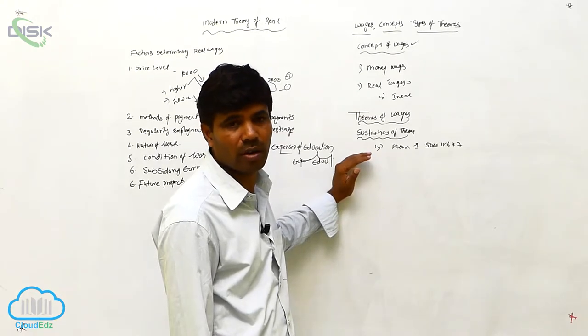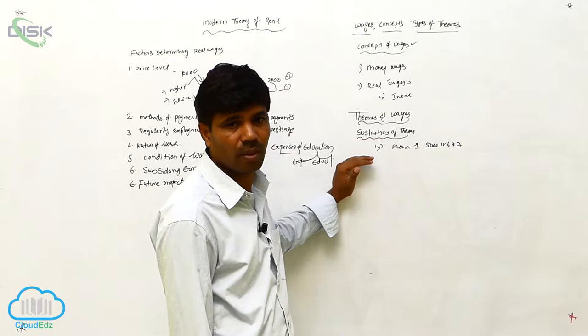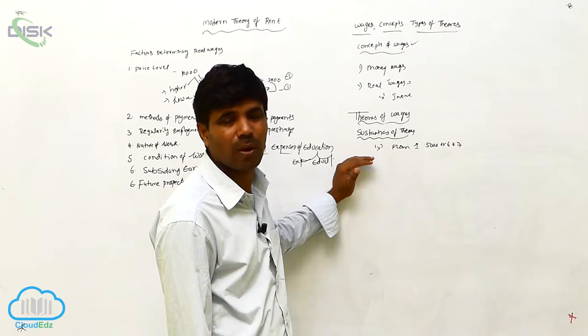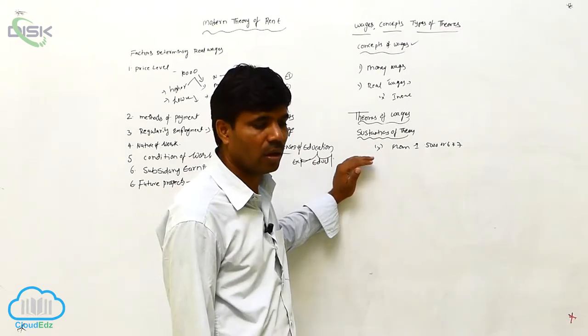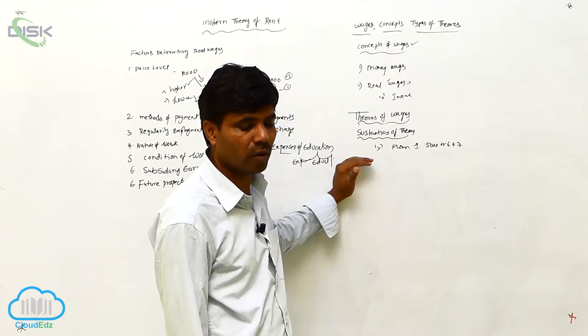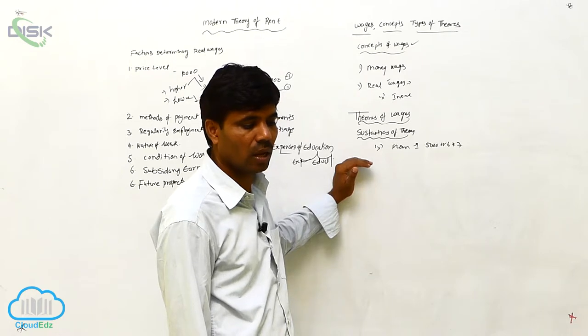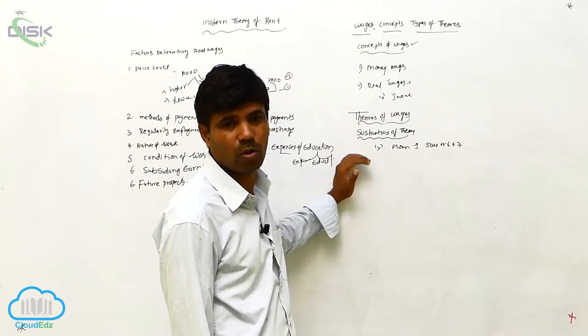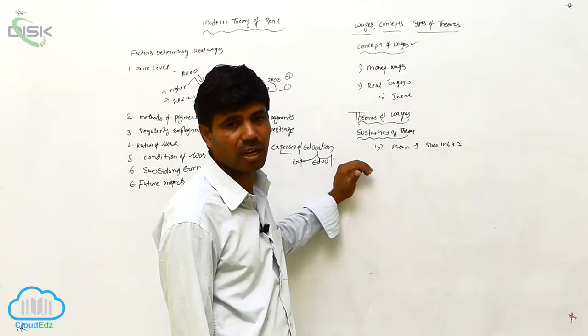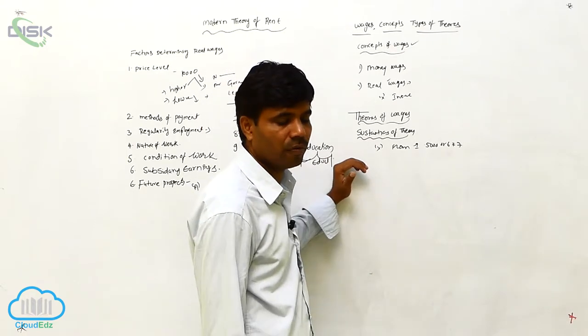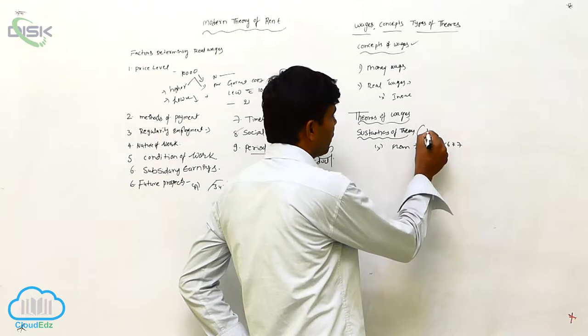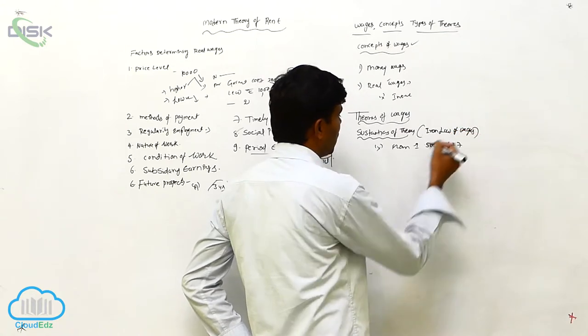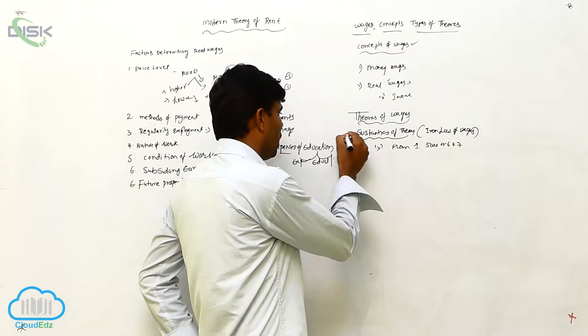When the level of subsistence is very low, the supply of labor will be low and decrease. This theory was further developed by German economics, known as the Iron Law of Wages.